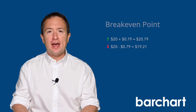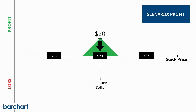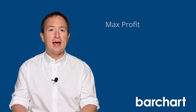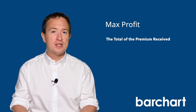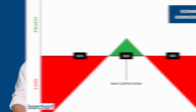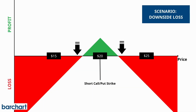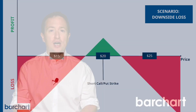If NLY's stock trading price is exactly $20 at expiration, you'll receive the maximum profit for the trade, which is $0.79, or $0.79 per contract. The maximum profit is the total of the premium received at the start of the trade. However, if the price of NLY stock moves beyond either of the breakeven prices at expiration, the trade will start to accumulate a loss.